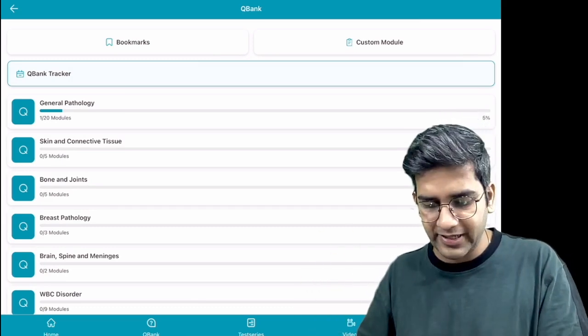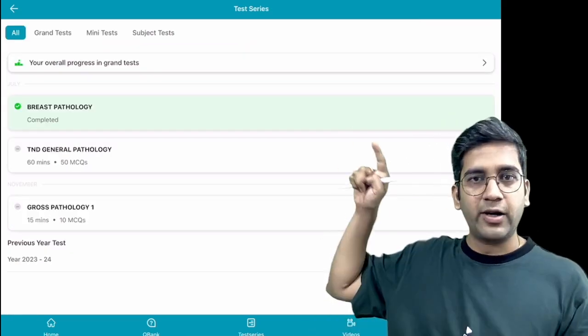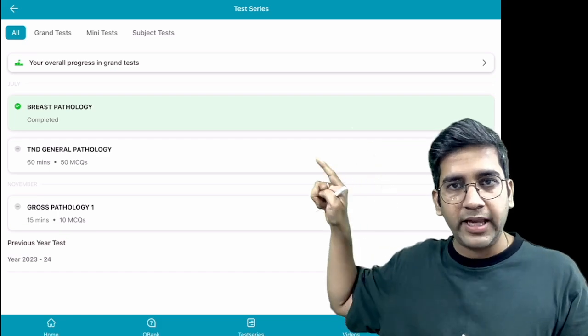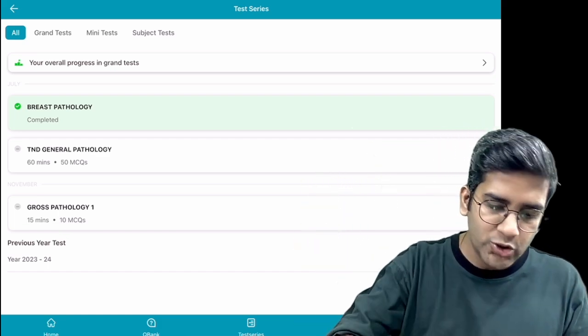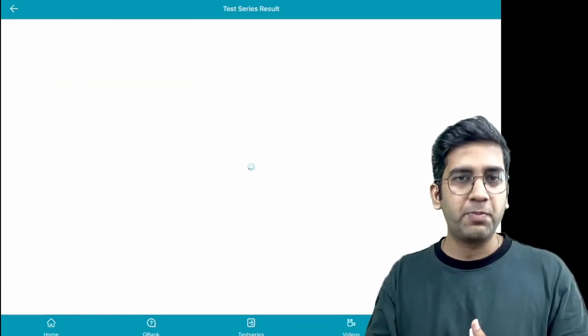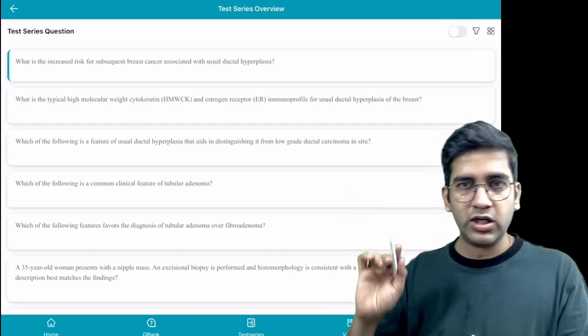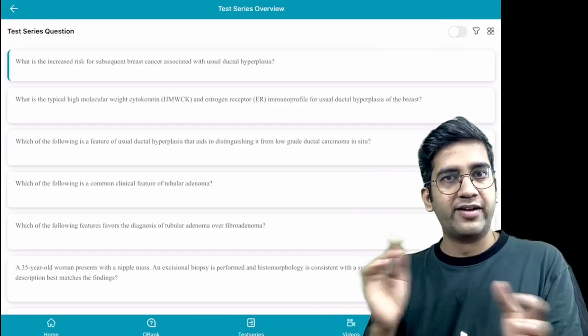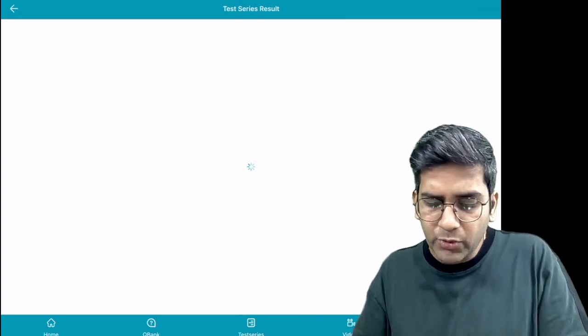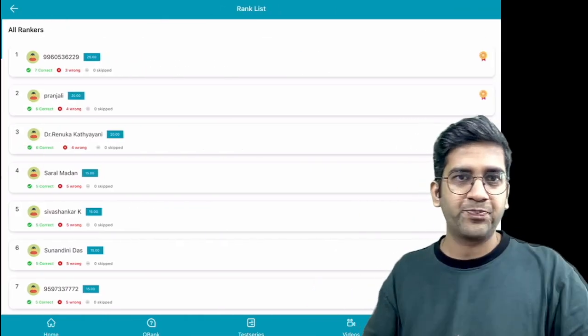Then we have test series. A completed series will change color. If it's not completed, it will be like this. Let's go to the completed test series. It'll show all the things. You can review the answer using the same model. The toggle button will help you to see right or wrong.